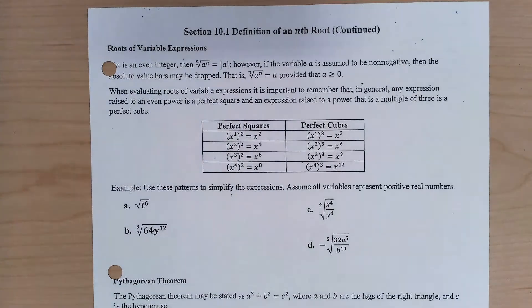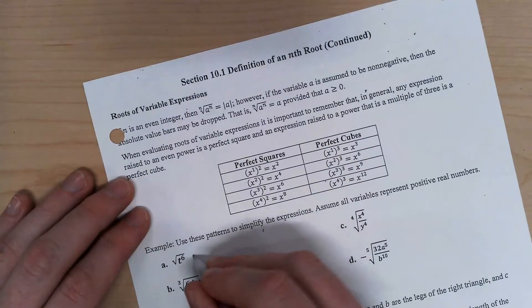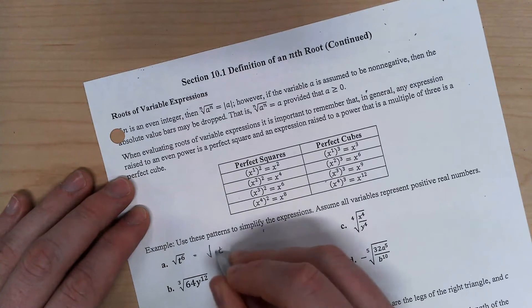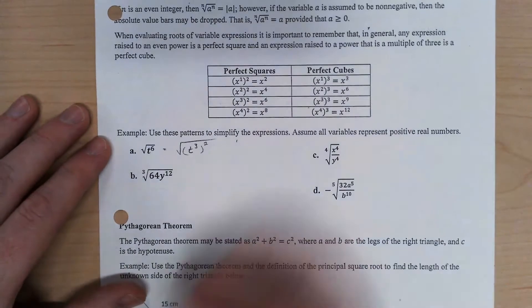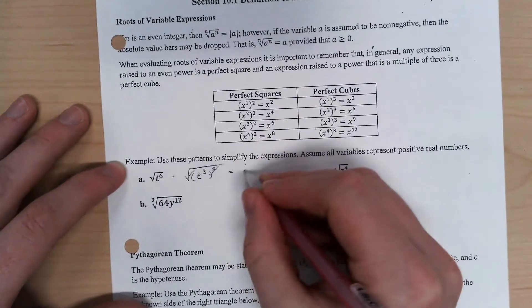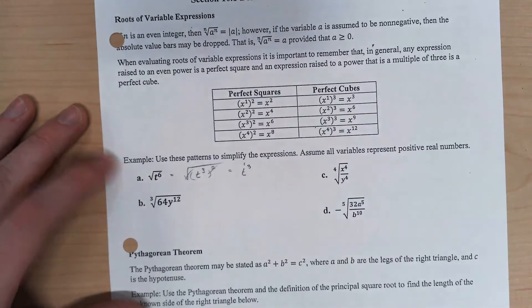So the square root of t to the 6th here, really this is the same as the square root of t cubed squared. So now those two can cancel for me. We've got t cubed.